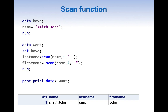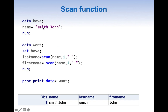Now let us quickly look into the SCAN function. SCAN function — whenever we have a variable with multiple words, in our case the multiple-word variable is 'name' where it has a value of 'Smith John' — and if you want to extract one particular word by position, we can easily do that using SCAN. Here we have mentioned our variable name and the position of the word we want. We also need to mention our delimiter. Delimiter is not mandatory but it's good practice to mention it.